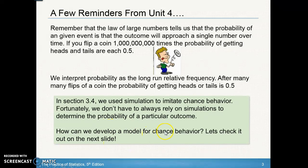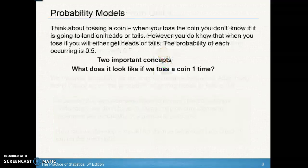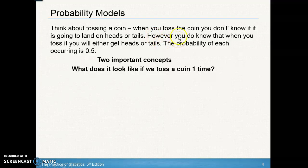When we develop a model for chance behavior, we ask: what are the possible outcomes for the situation, and what are the probabilities for each? Let's think about tossing a coin. When you toss a coin, you don't know if it's going to land on heads or tails — however, you do know that when you toss it, you either get heads or tails.